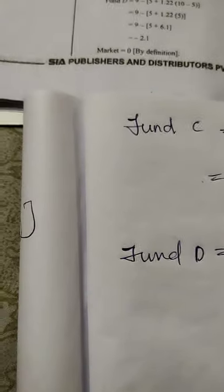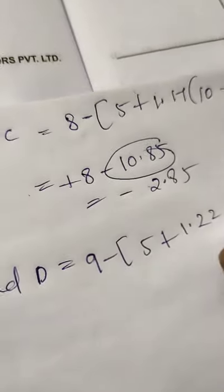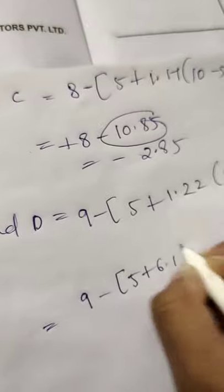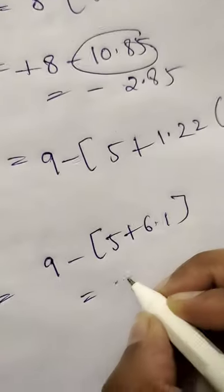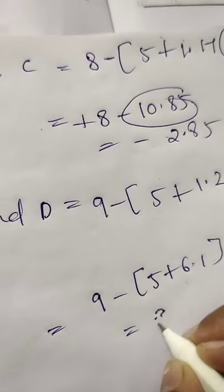Similarly we need to calculate for Fund D. For Fund D, Rp value will be 9, so 9 minus Rf is fixed 5, plus beta value is 1.22 into market value is fixed 10 minus 5. So we get here 9 minus 5 plus 6.1, which is nothing but 9 minus 11.1. After calculation we get minus 2.1.